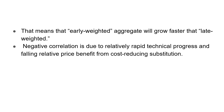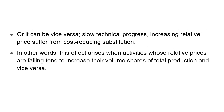The effect tells us that the early weighted average would be growing faster than the late weighted average, and there is a negative correlation. This is mainly due to relatively rapid technical progress and falling relative prices that benefit from cost-reducing substitution. The reverse can also occur: slow technical progress with increasing later prices suffering from cost-reducing substitution.